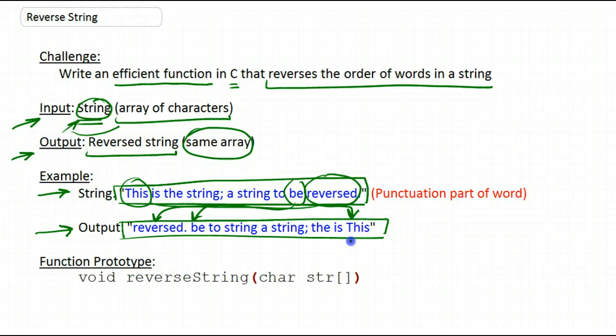So what we essentially did is reverse the words in that given string, and that output string overwrites the array that we were passed - this will be our output.